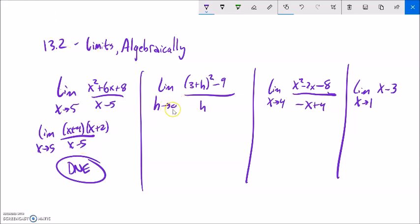This next one, if I try to plug in 0 for h, I'm going to be dividing by 0. And it actually ends up with 0 over 0. 9 minus 9 is 0. So there's nothing I can factor yet here. But let me deal with this a little bit. How about I multiply this out? 3 plus h squared.